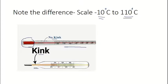Either mercury or alcohol is used as the thermometric liquid. It also has a bulb attached to a very thin, hair-like capillary tube that extends from the bulb to the other end of the thermometer. The purpose of the laboratory thermometer is to measure temperatures higher than what a clinical thermometer can measure.